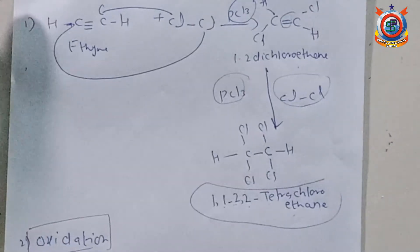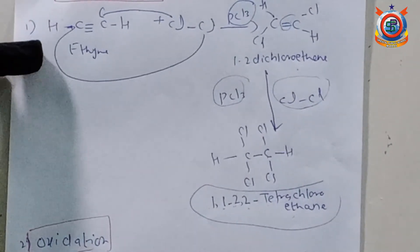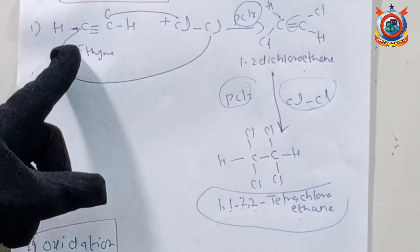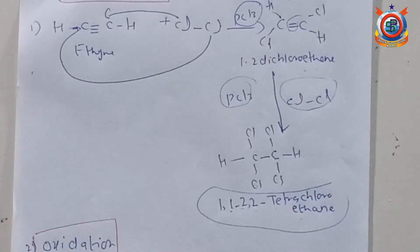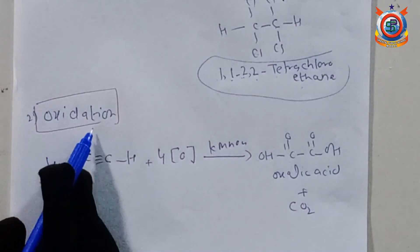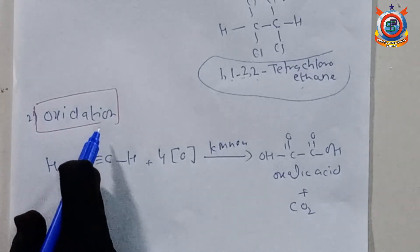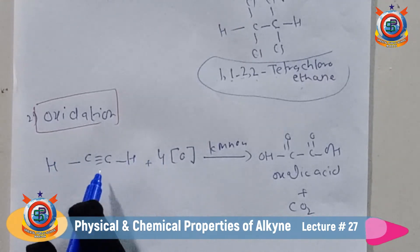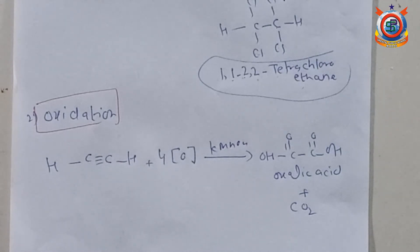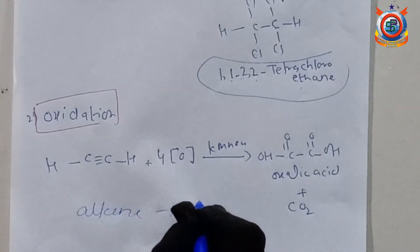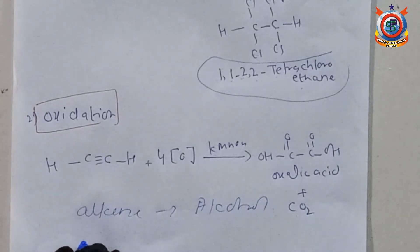So the first reaction in chemical properties is halogenation — the addition of halogen. One molecule of chlorine attaches to one carbon and another chlorine to the other carbon. The second step uses another molecule of chlorine. The other reaction is oxidation.